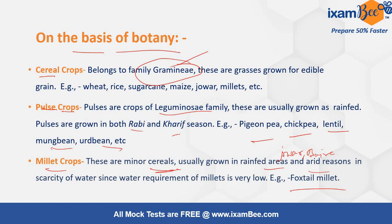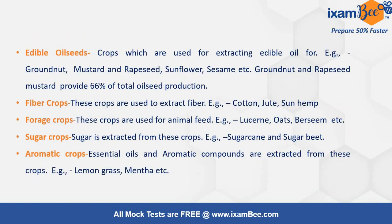Chickpea is a Rabi crop. Cereal crops are grasses which are generally grown for edible purposes — like wheat, rice, sugarcane, maize, jowar, and others. The next category is edible oilseed crops, which are mainly grown for their oil content — they are used for extracting oil.